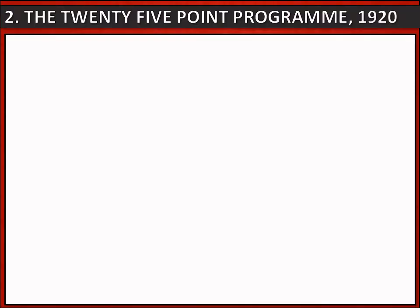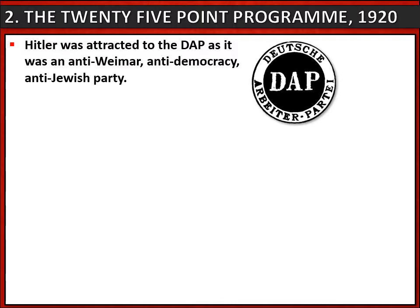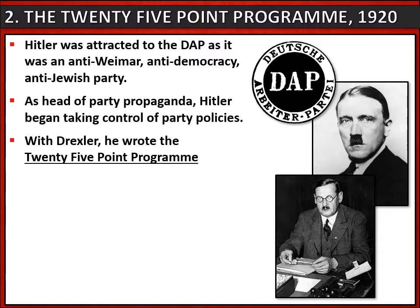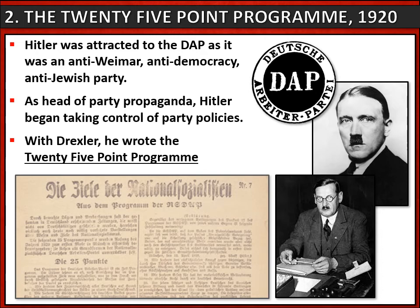Let's look at how Hitler took control, starting with the 25-point program. When Hitler first joined the DAP, he was attracted to some of its ideas — it was anti-Weimar, anti-democracy, and anti-Jewish. Hitler became head of party propaganda and began to take control of party policies by working alongside Anton Drexler to write the 25-point program, a collection of 25 policies or promises which the party offered.